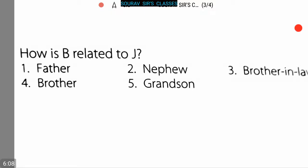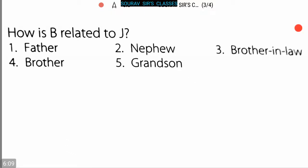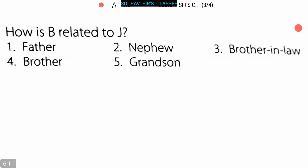The last question: how is B related to J? We have to find the relationship between B and J. From the relation diagram, it is clear that B is the grandson of J. So option 5, that is grandson, is the correct answer. Thank you.